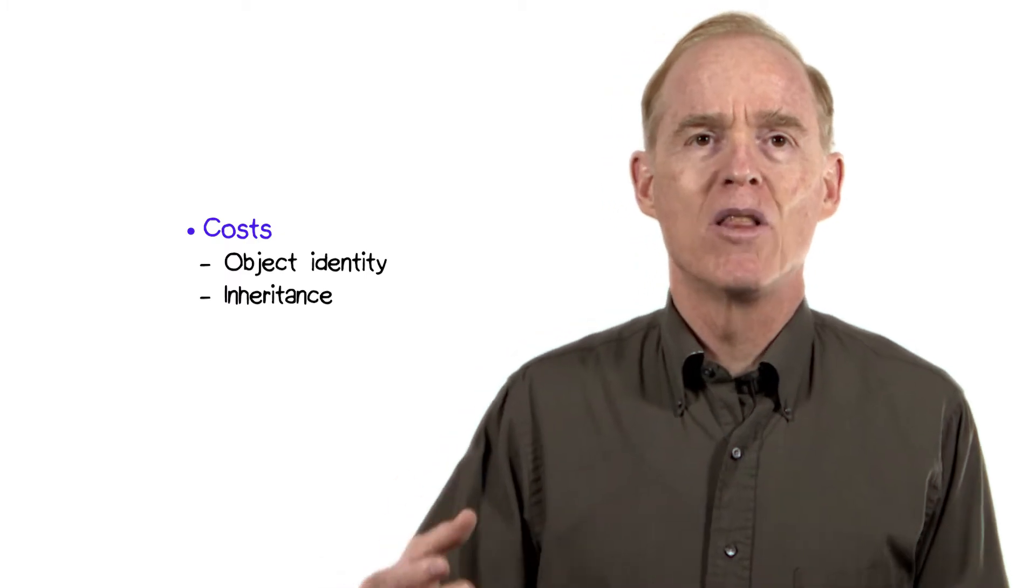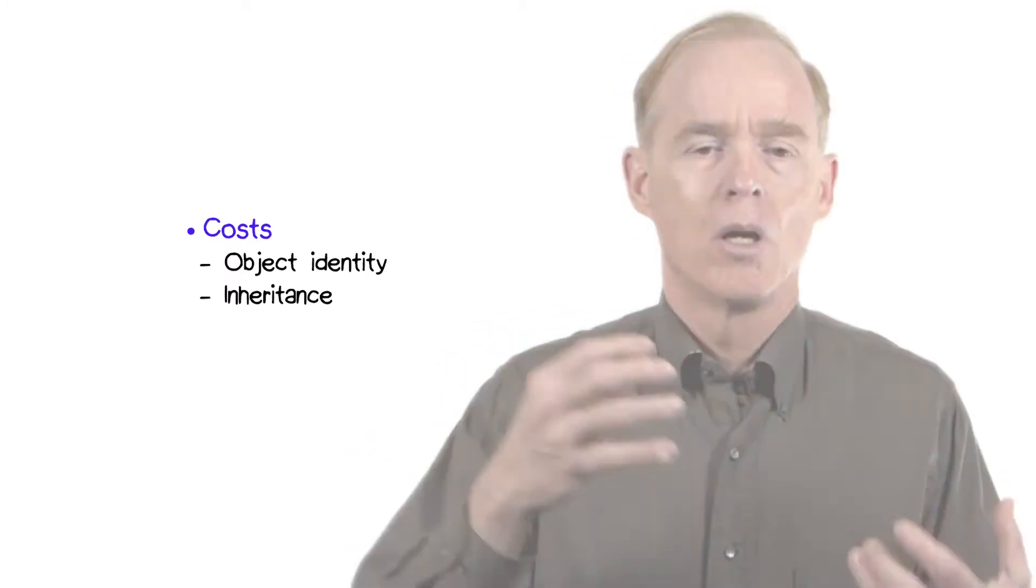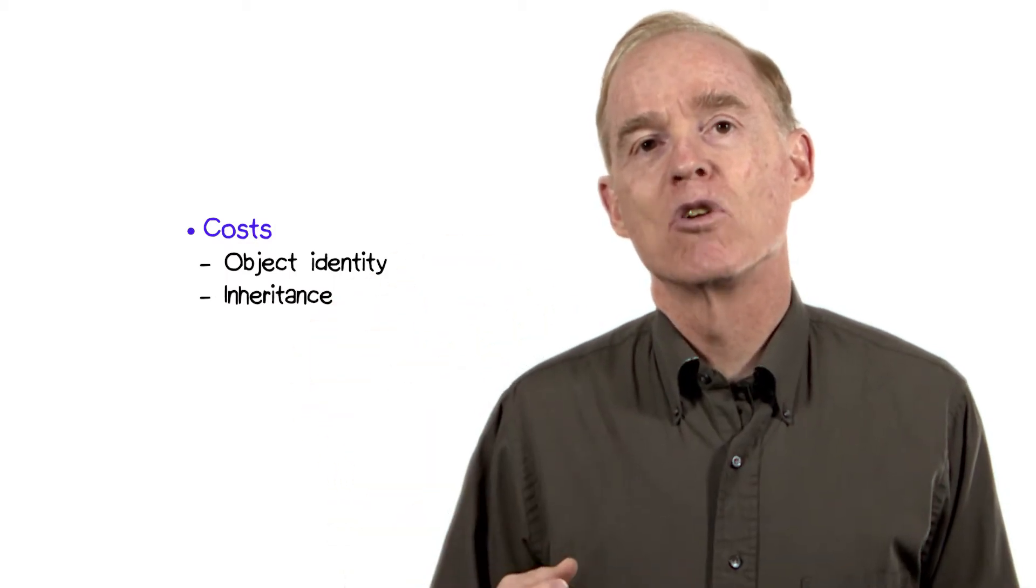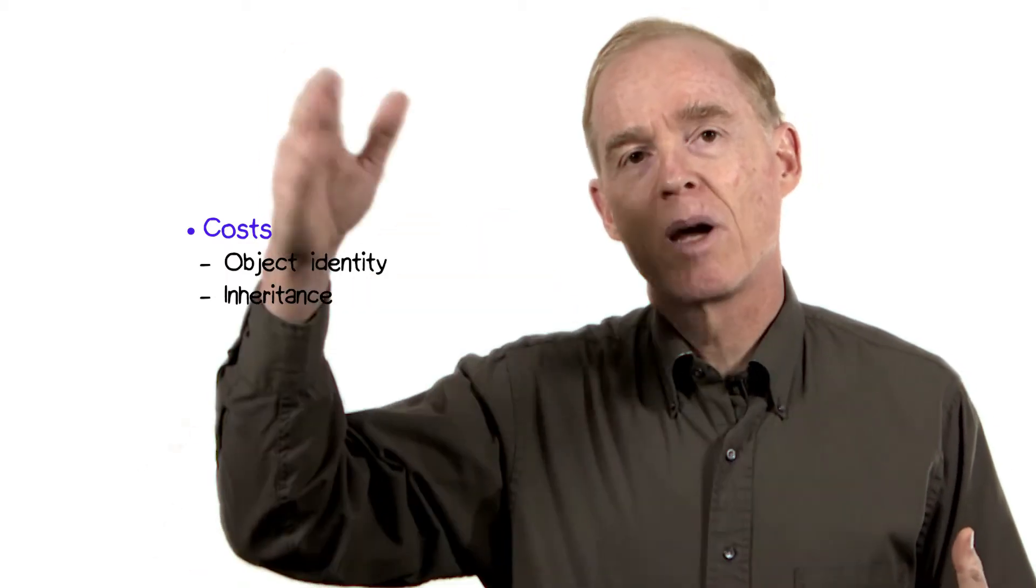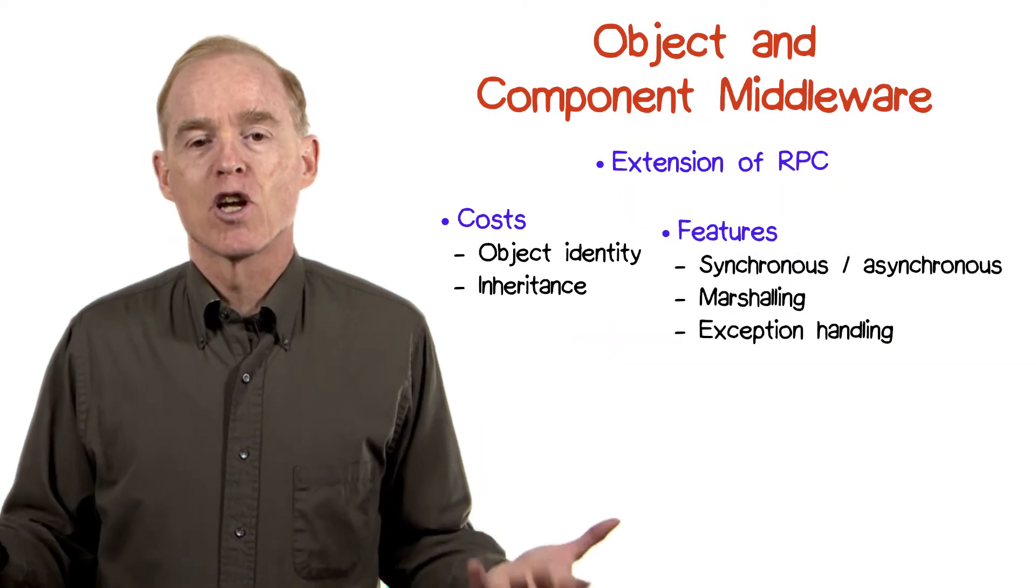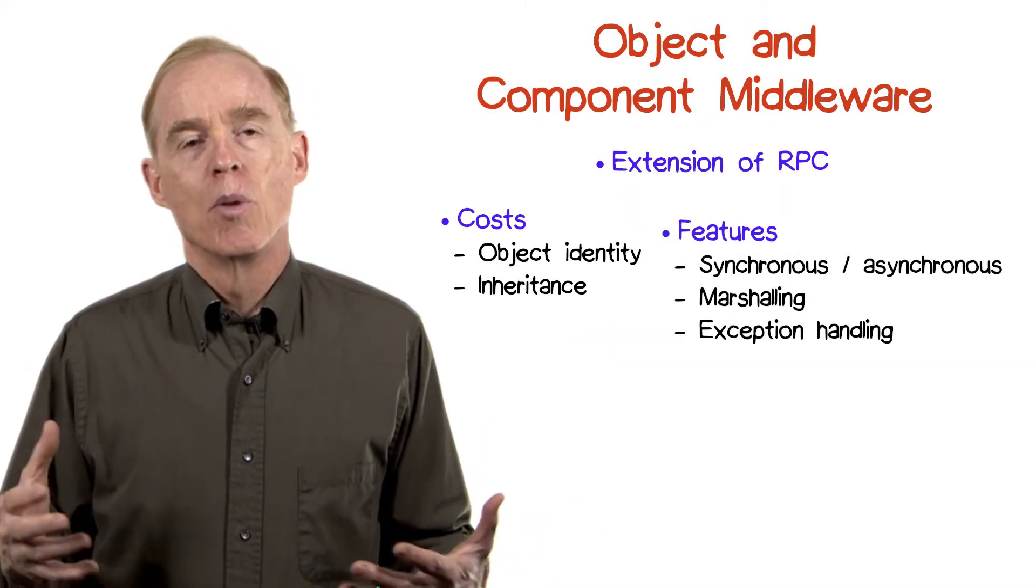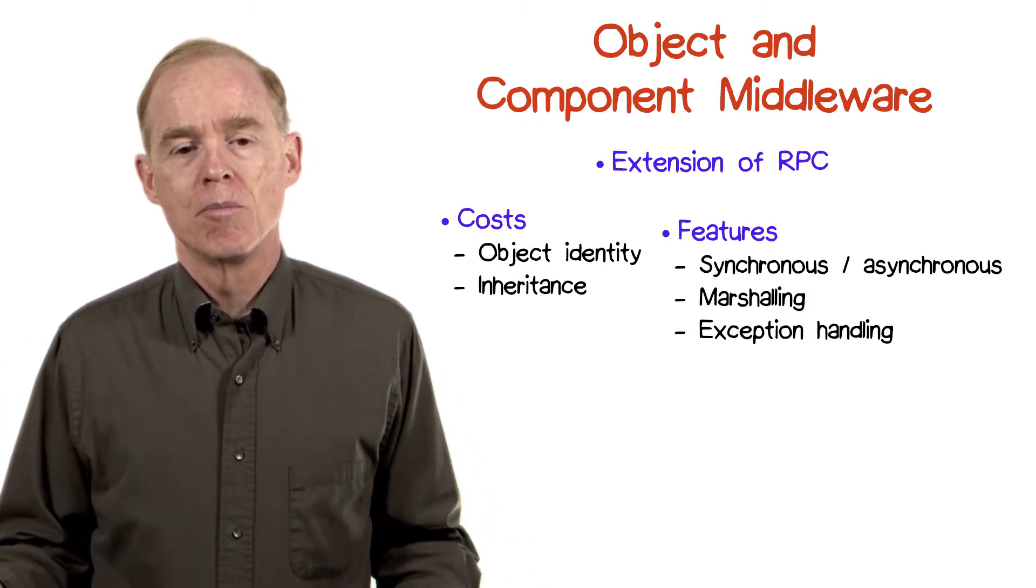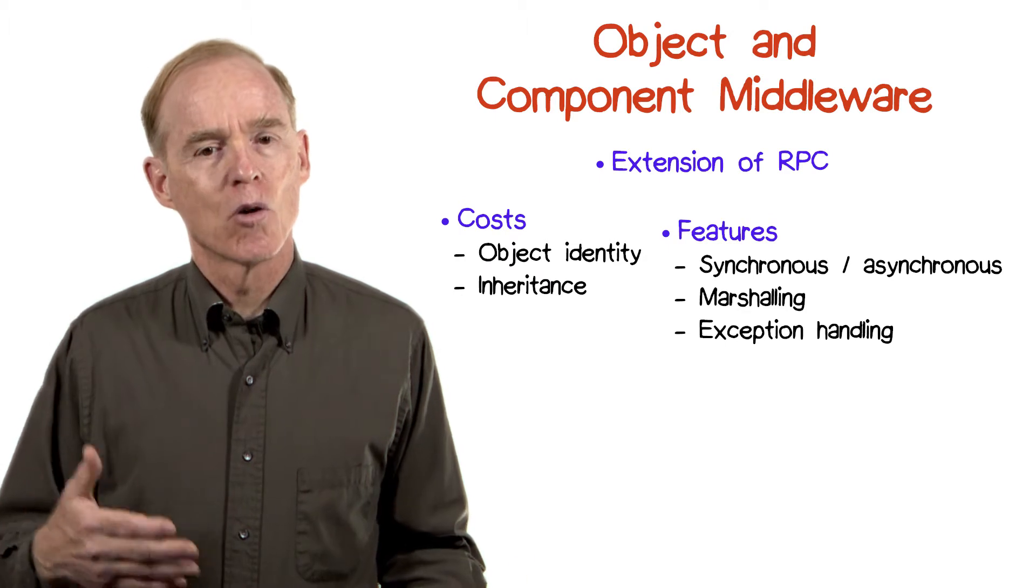And then inheritance - could it be that a child instance is on one machine and a parent instance is on another machine, and there's delegation of message passing from child to parent? Features that object and component middleware might provide include both synchronous and asynchronous message passing, marshalling of data, and exception handling across machines.